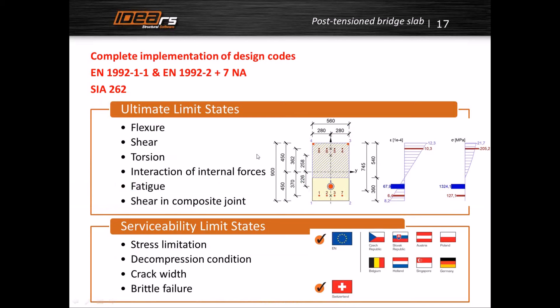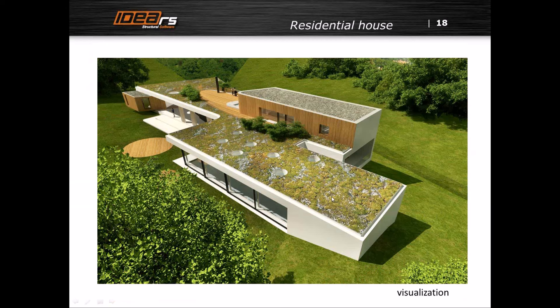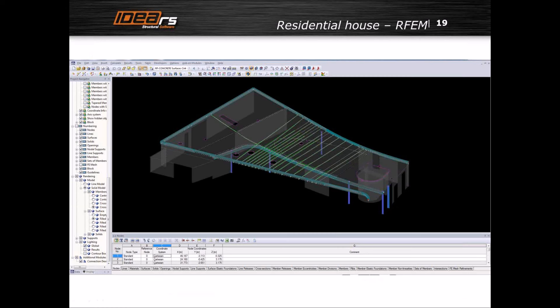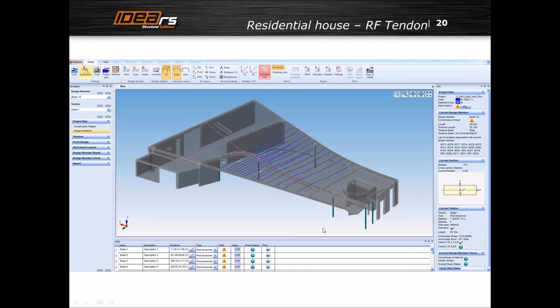Going back to the presentation: all ultimate limit states and serviceability limit states are checked, and this example is finished. The second example is the post-tensioned slab of a residential house. This is a visualization of the house — it's actually been built, and I was involved in its design some time ago. I designed this pre-stressed slab, making a 3D model in RFEM. We then exported it and designed the necessary pre-stressing tendons. The structure has a 4.5-meter cantilever and a long span supported only by a slender column — that was the inspiration.